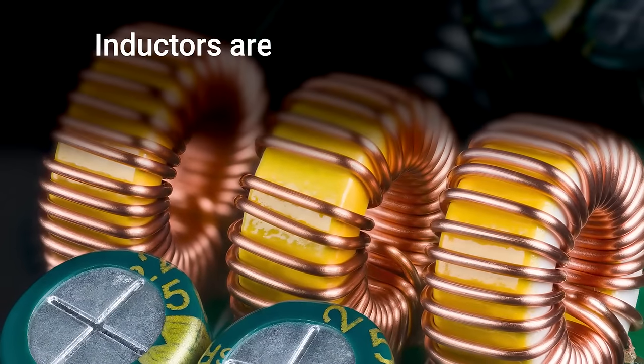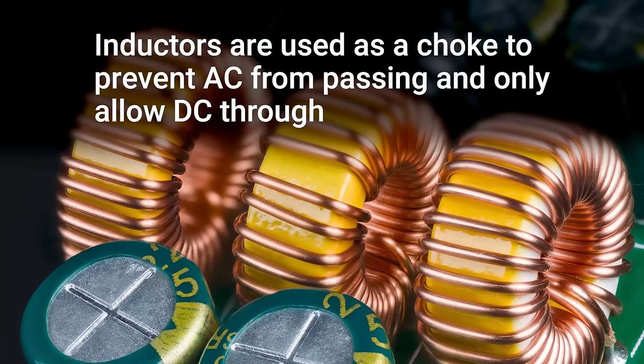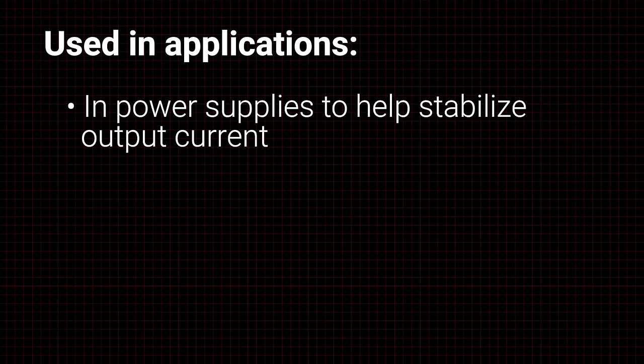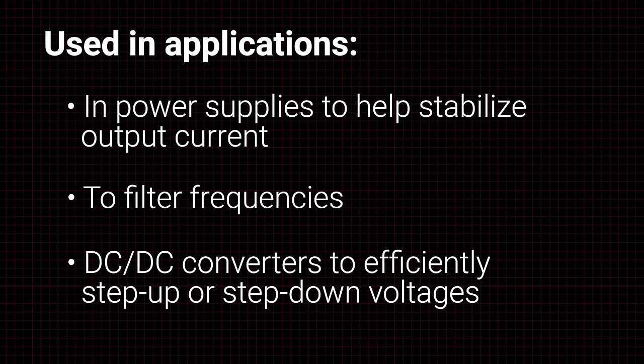Inductors are used as a choke to prevent AC from passing and only allow DC through in various applications, such as in power supplies to help stabilize output current, to filter frequencies, and in DC to DC converters to efficiently step up or step down voltages.